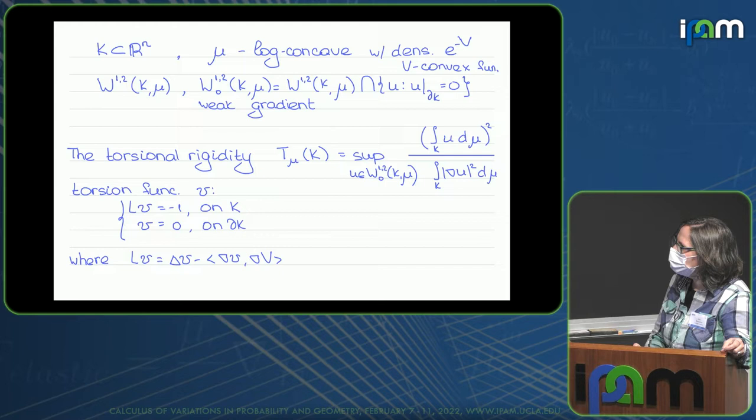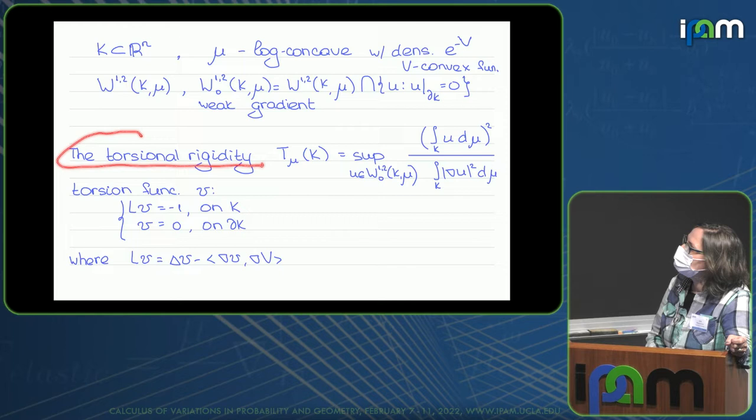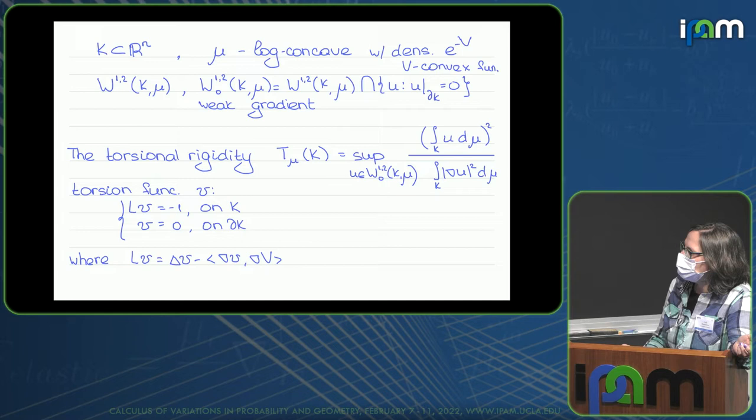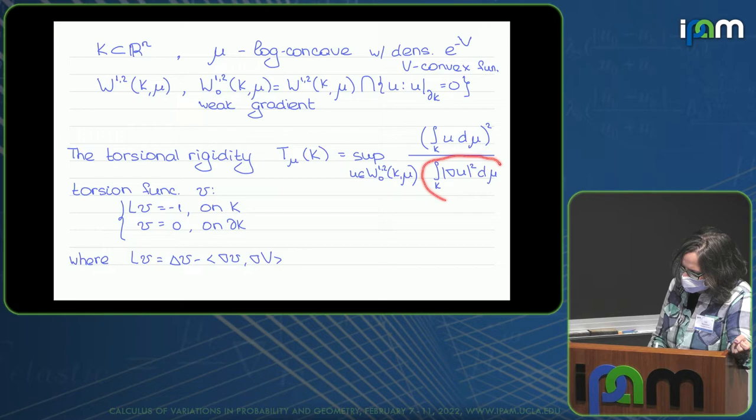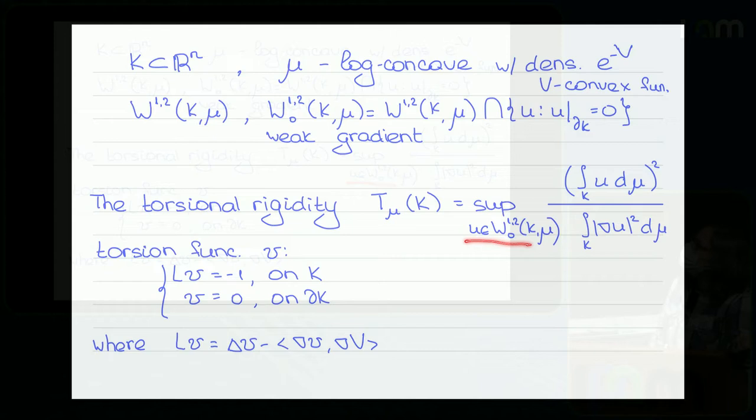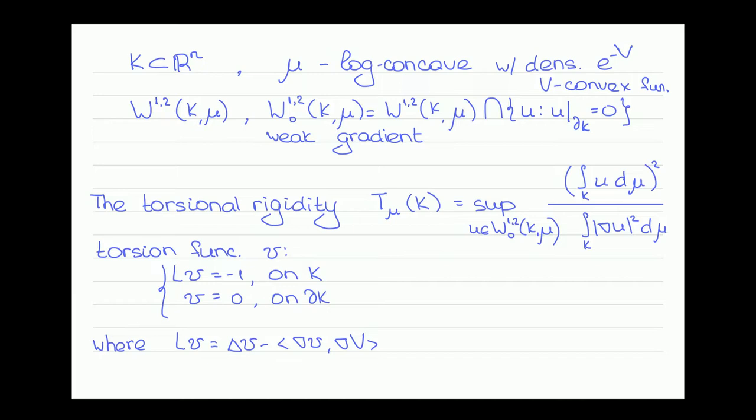Let's start from some definitions. The first definition we would like to consider is the definition of torsional rigidity. Torsional rigidity of a domain K can be defined with respect to measure mu as the supremum of the ratio of the square of the integral of U over the integral of the square of the gradient of U, where we consider all functions U vanishing on the boundary of K.